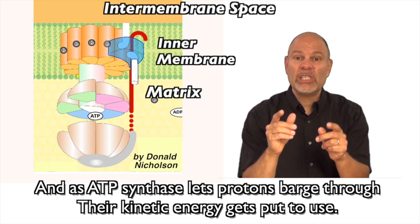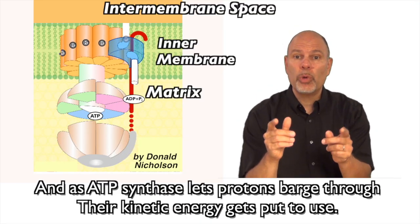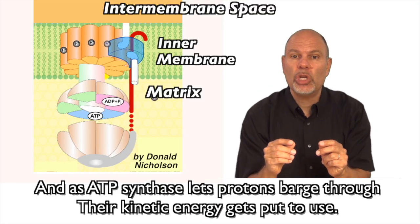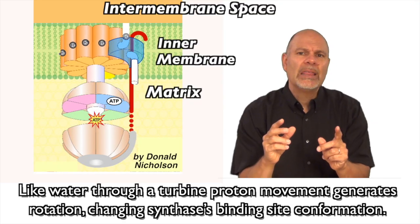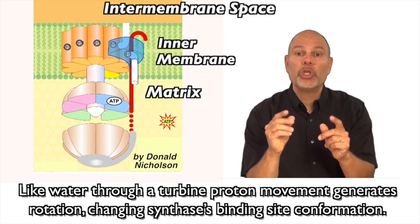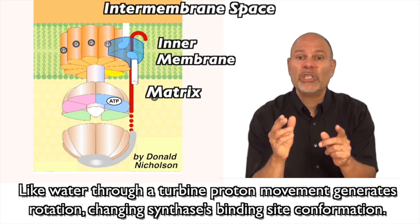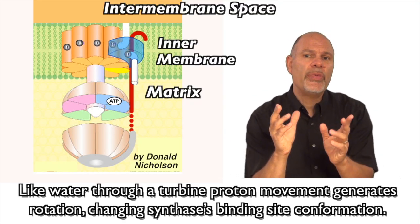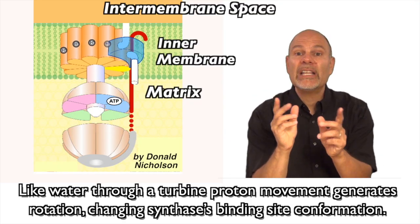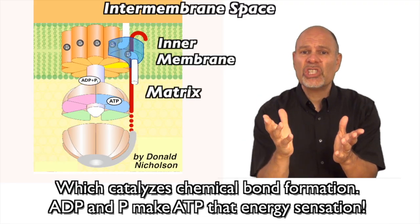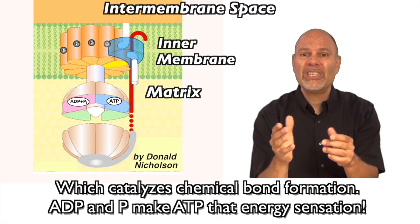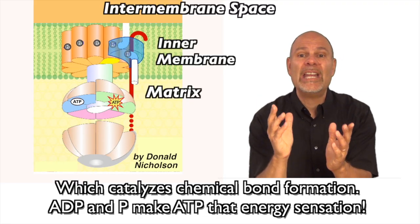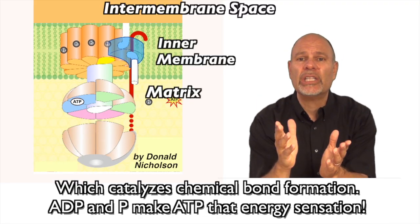As ATP synthase lets protons barge through, their kinetic energy gets put to use. Like water through a turbine, proton movement generates rotation, causing a change in the synthase's binding site conformation, which catalyzes chemical bond formation. ADP and P make ATP — that energy sensation.